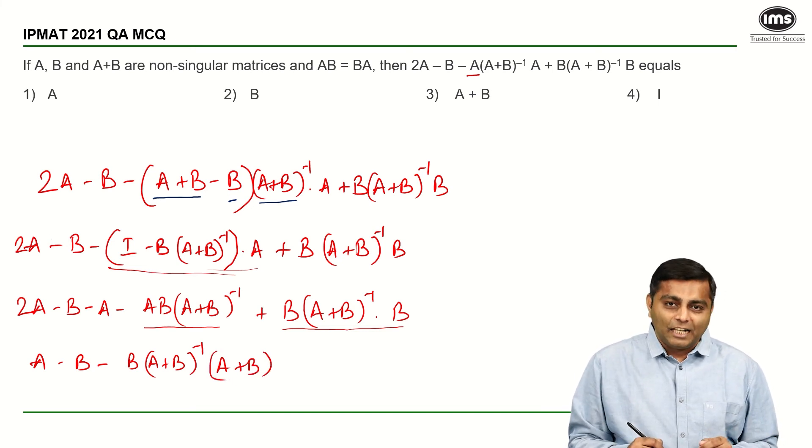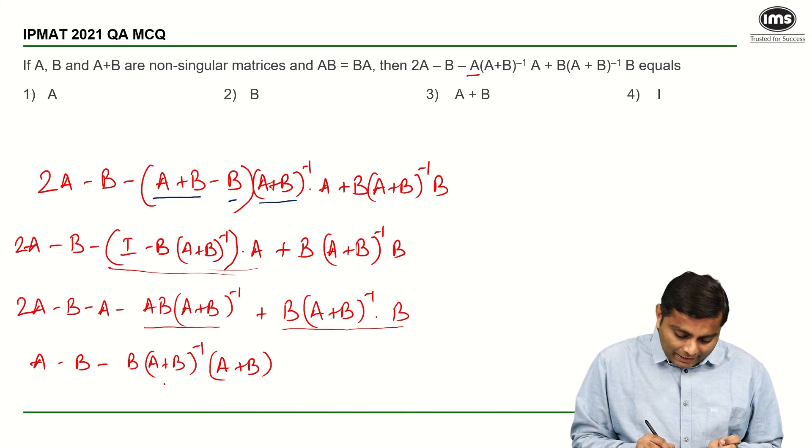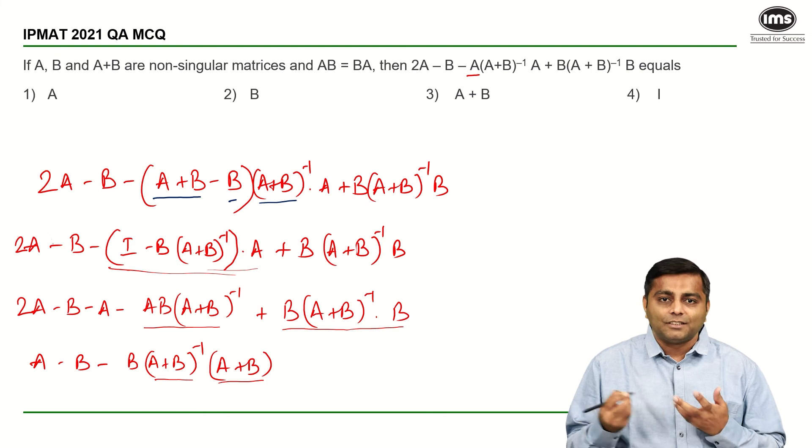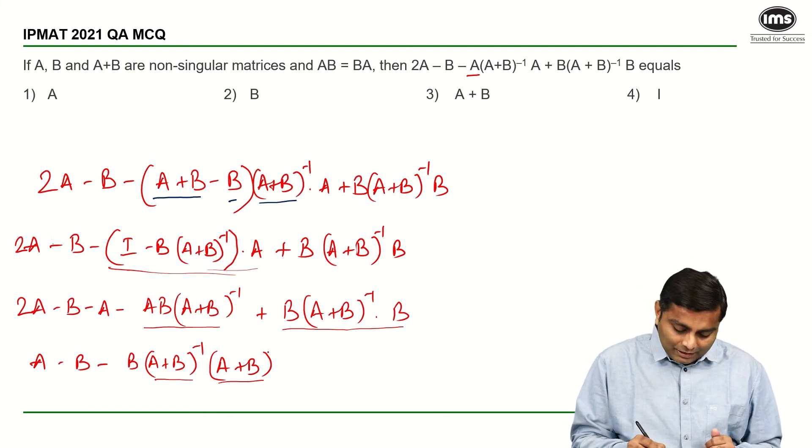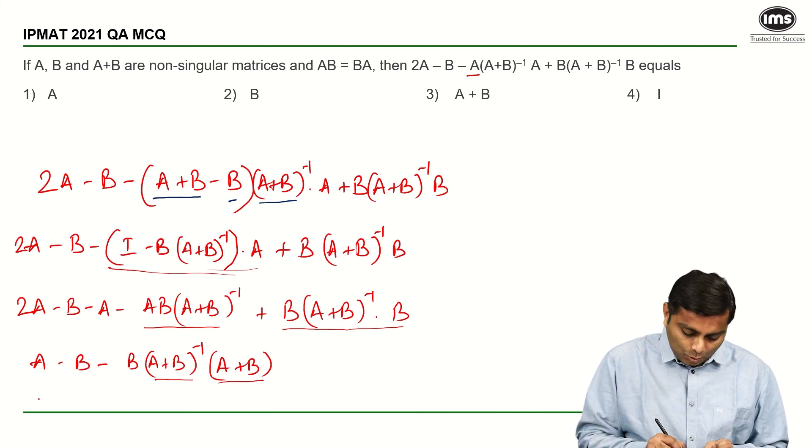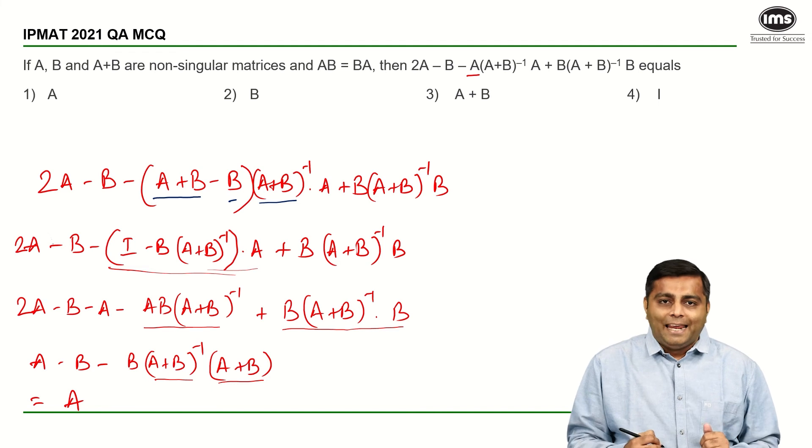This simplifies our life a lot. We know that A plus B inverse into A plus B will give us I which is identity matrix. So, this reduces to 1 and B minus B is anyway cancelling out each other. So, it is going to be 0 which means your final answer is matrix A.